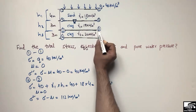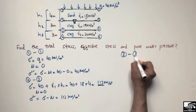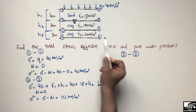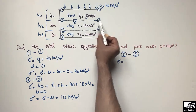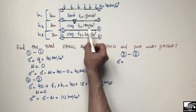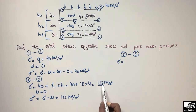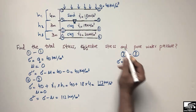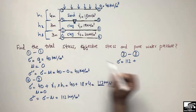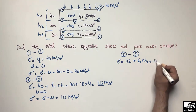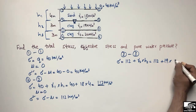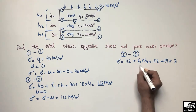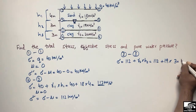Now to calculate stresses at point 3-3. The total stress at 3-3 equals the stress at 2-2 plus the stress contribution from this layer. Total stress at 3-3 = 112 + gamma 2 × h2 = 112 + 19 × 3 = 169 kN/m².